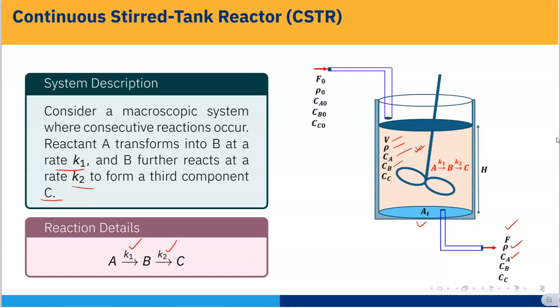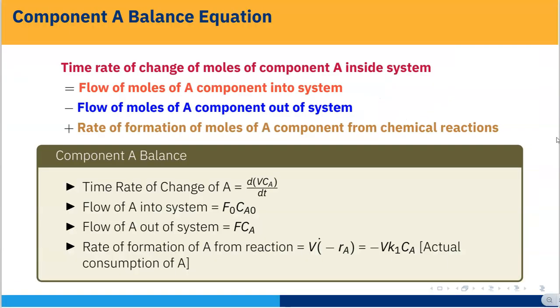The key assumption is that whatever concentration exists inside the reactor is the same concentration at which the fluid comes out. Now we have to do the modeling — first we use the component A mass balance.